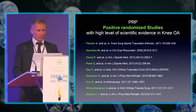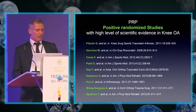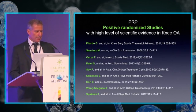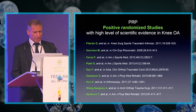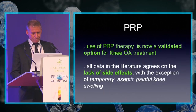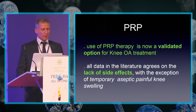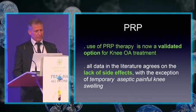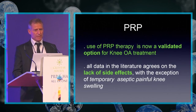On this slide, you can find nine positive randomized studies with a high level of scientific evidence in knee osteoarthritis. In all these studies, PRP is better than HA, and HA is better than placebo. Use of PRP therapy is not yet a fully validated option for knee osteoarthritis treatment. All data in the literature agrees on the lack of side effects, with the exception of temporary aseptic painful knee swelling.